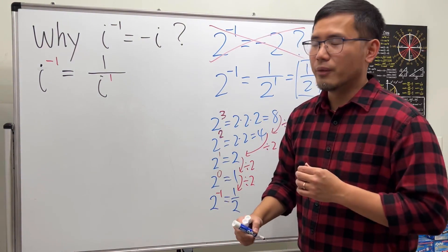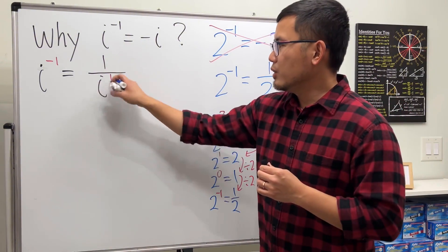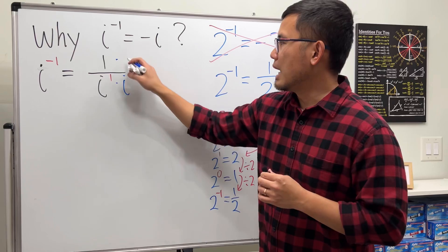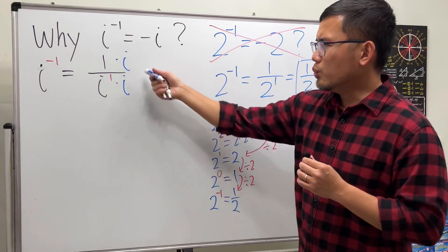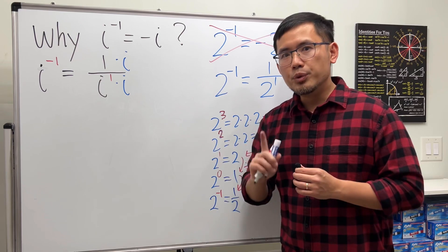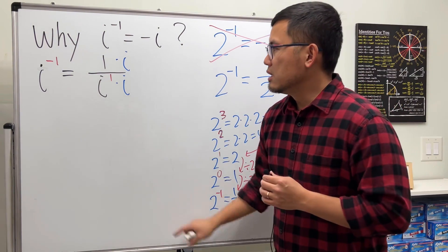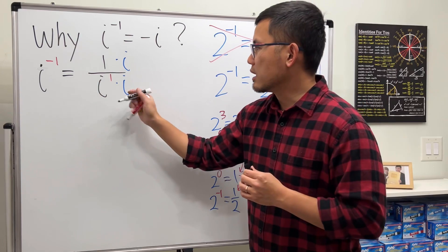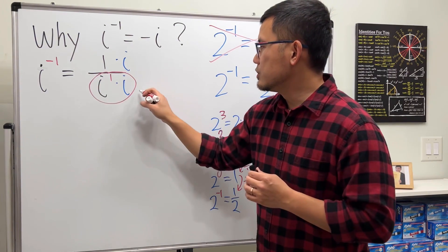Here's the deal: i usually doesn't want to be on the bottom. Let's multiply the top and bottom by i. We are just multiplying by 1, so we're not changing anything. The beauty of doing so is that i to the first times i to the second together is just equal to i squared.